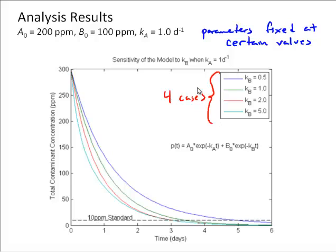For each of those cases, generating a graph of the contaminant concentration as a function of time. I've also indicated a standard here. Perhaps we're interested in seeing how quickly these contaminants decay to reach a 10 parts per million standard.